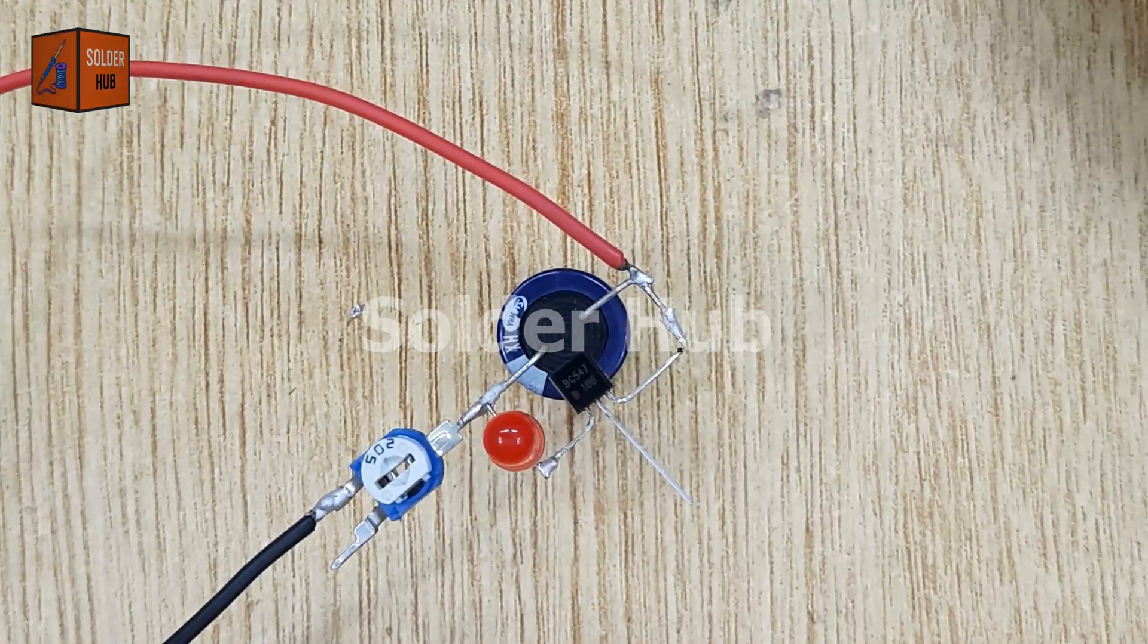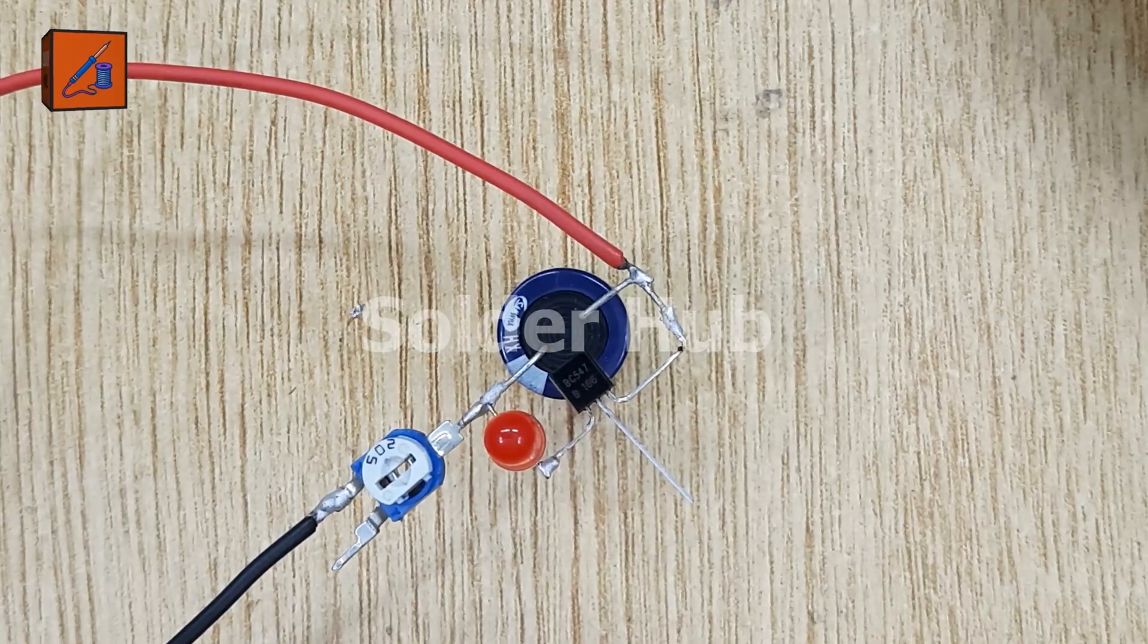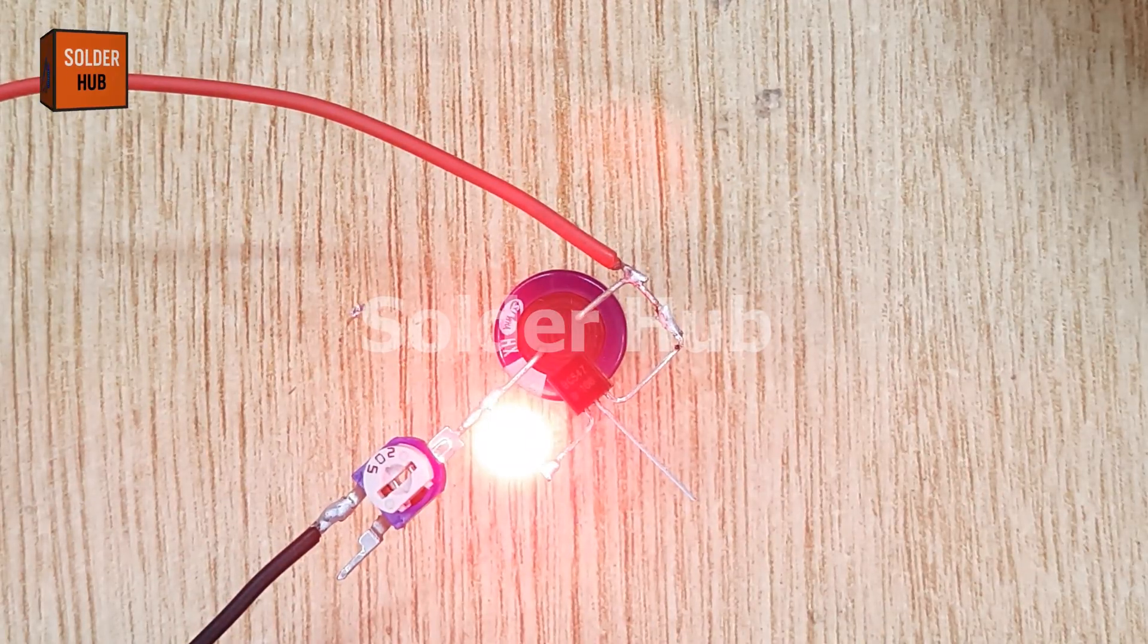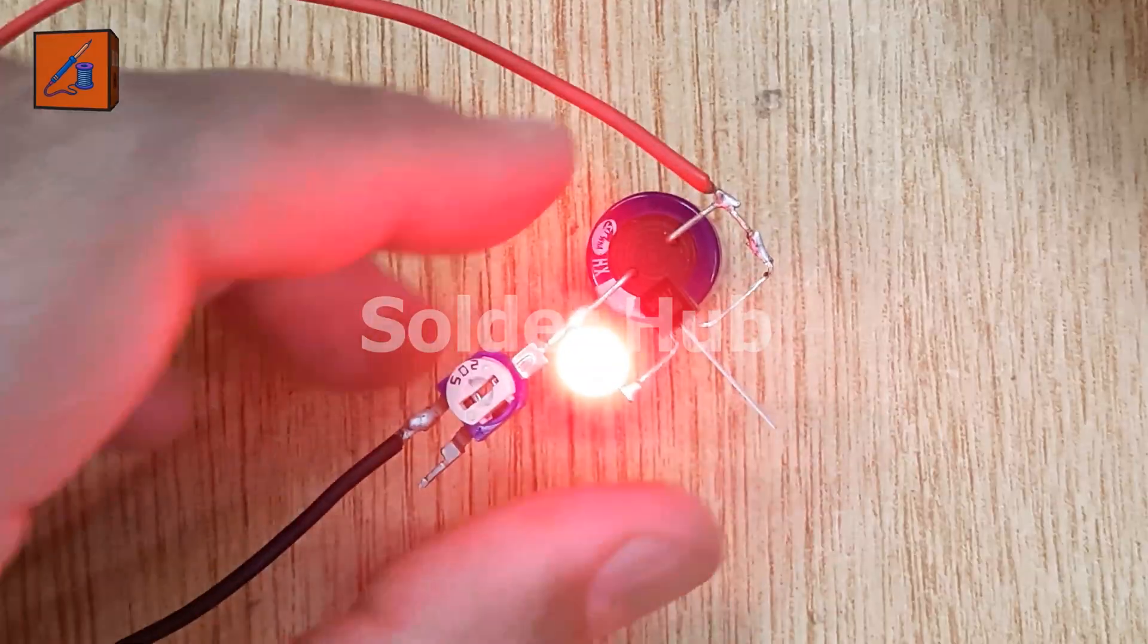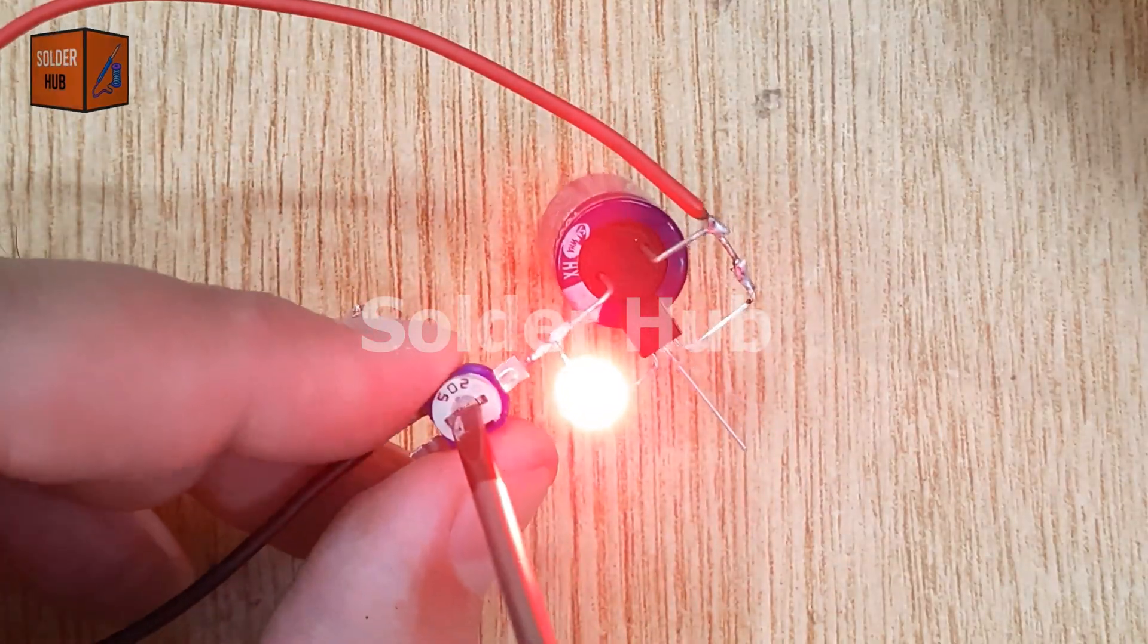When I connect the 12-volt battery to the circuit, the LED lights up immediately. Then, as I gently turn the knob of the potentiometer with a small screwdriver, the LED starts blinking.